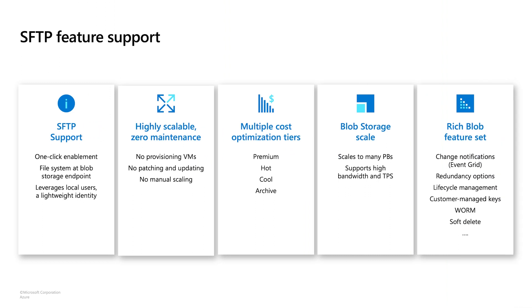SFTP support is built on top of the Azure Blob Storage foundation and leverages the hierarchical namespace, which means you get the rich set of Blob capabilities right out of the box for your SFTP workloads. Setting up SFTP is simple — with just a single click, you can provision an SFTP endpoint for your storage account. Via this endpoint, you get SFTP access to a file system that supports file and folder hierarchy and atomic operations like renames. We are also introducing local users, a lightweight Blob Storage identity designed for SFTP. Azure provides a highly scalable, fully managed SFTP service and takes care of all the underlying infrastructure.